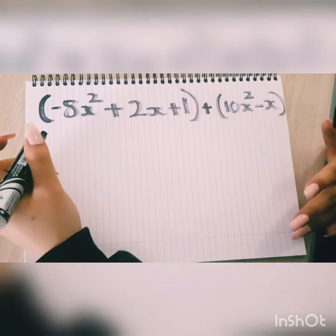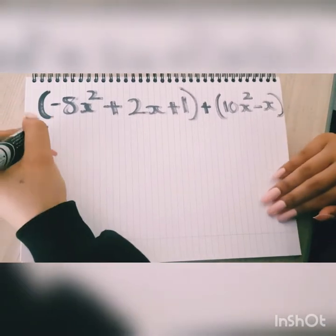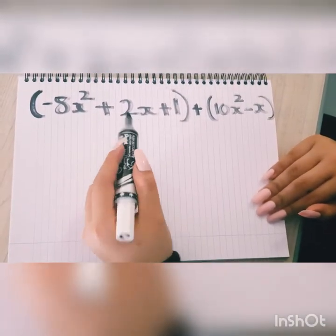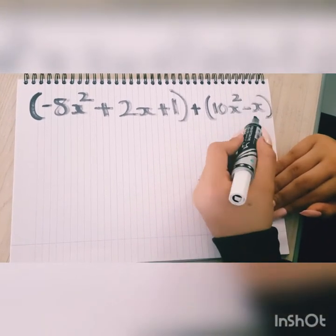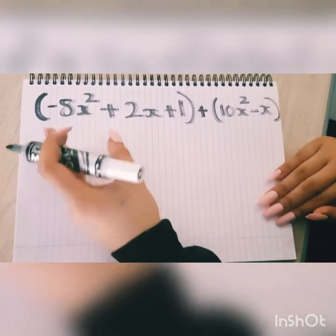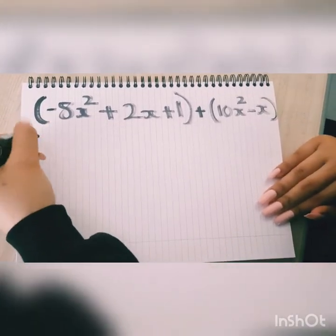Now let's take a look at another example. We have -8x² + 2x + 1 plus 10x² - x. The same way. Let's take down all the terms just the way they are.